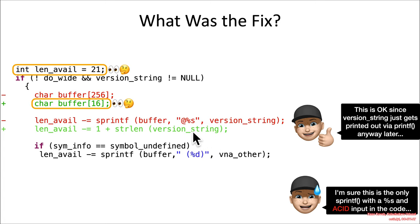Now the sanity check is all well and good. But what if there were other places that sprintf was found in the source code using %s and ACID input? Well, I'm sure that's not a concern, right?